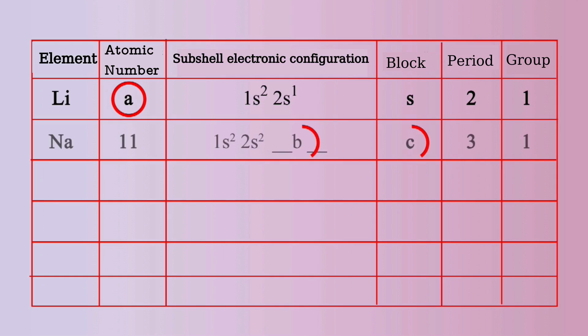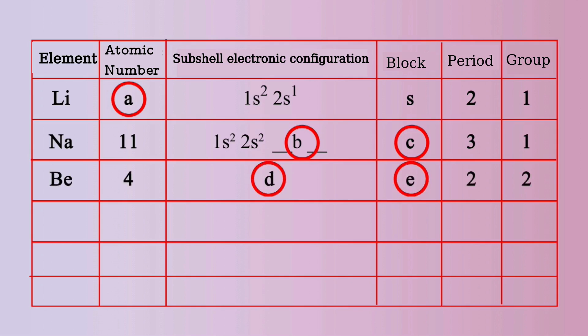The next element is Sodium. Its atomic number is 11. Its subshell electronic configuration and block are to be found out. It belongs to the third period and first group. For Beryllium, its atomic number is 4. Its subshell electronic configuration can be written, and its block can be found out. Beryllium belongs to period 2 and group 2.